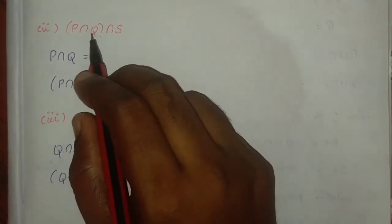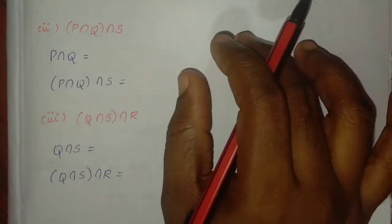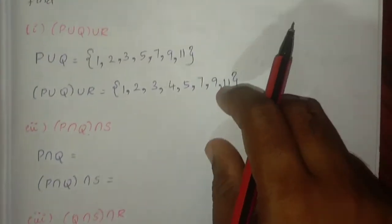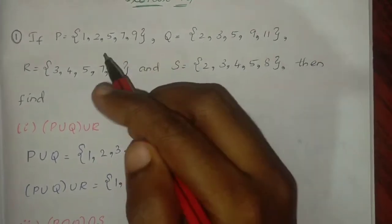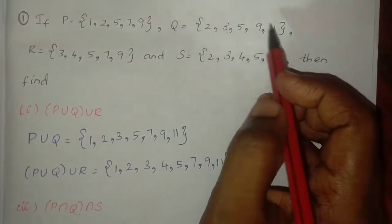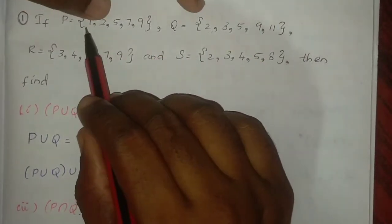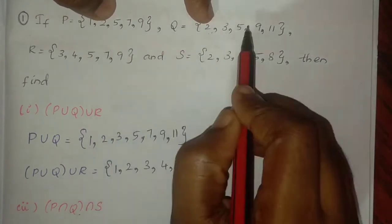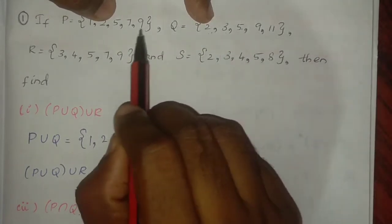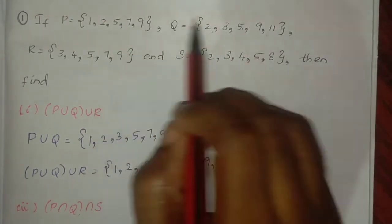P intersection Q — we need to find the common elements between P and Q. The common elements are: 2 is common, 5 is common, and 9 is common.